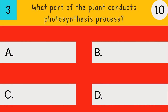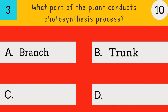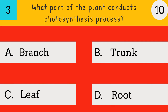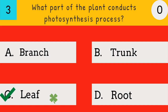What part of the plant conducts the photosynthesis process? Branch, Trunk, Leaf, Root. Answer: Leaf. The leaf of the plant conducts the photosynthesis process.